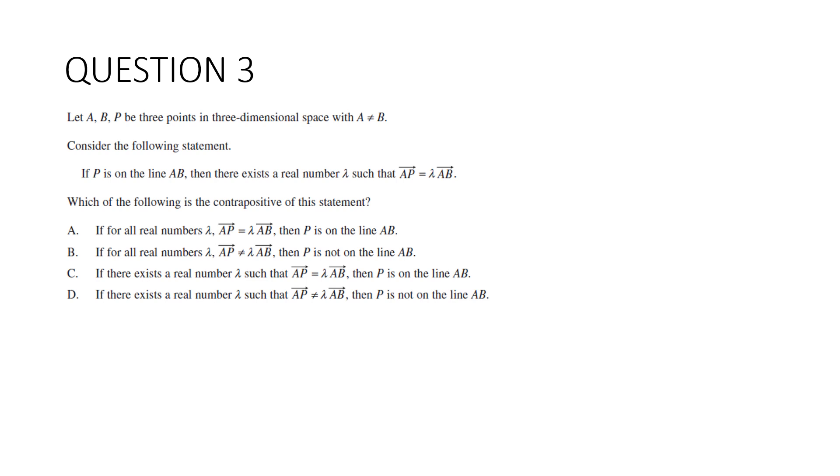Question 3. Let A, B, P be three points in three-dimensional space and A is unequal to B. Consider the following statement: If P is on the line AB, there exists a real number λ such that AP = λAB. Which of the following is the contrapositive of this statement?